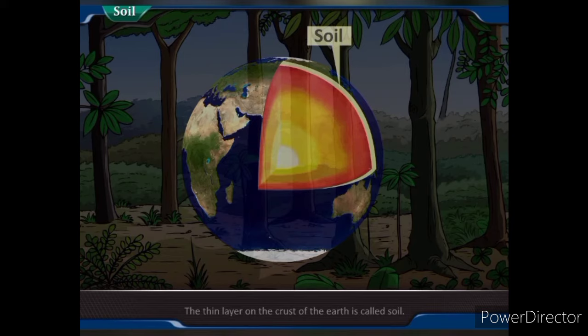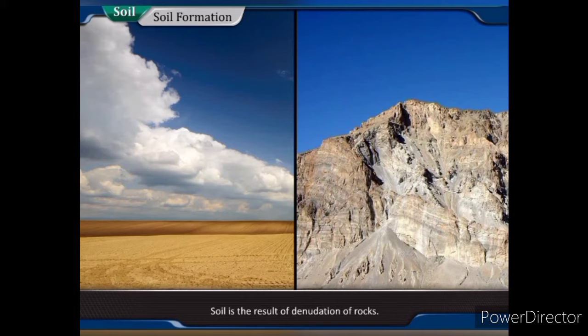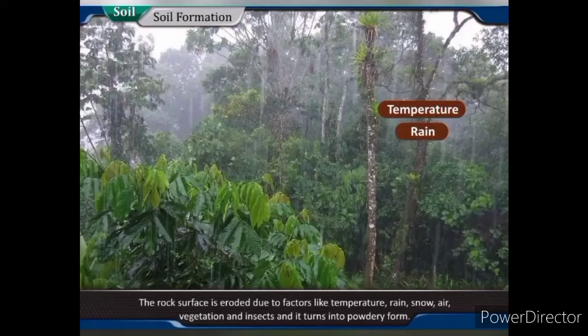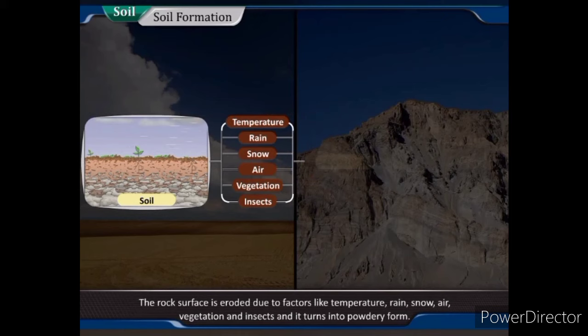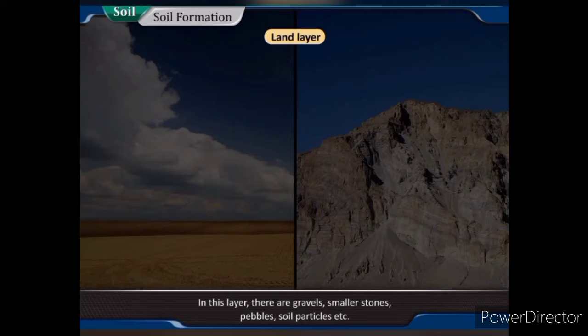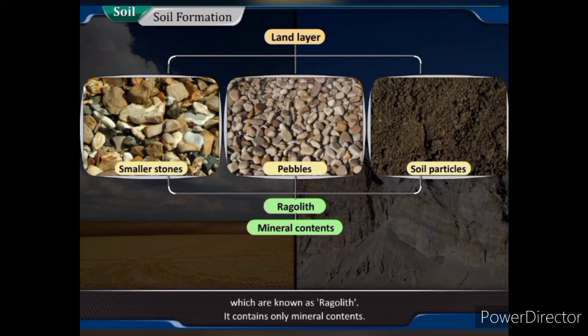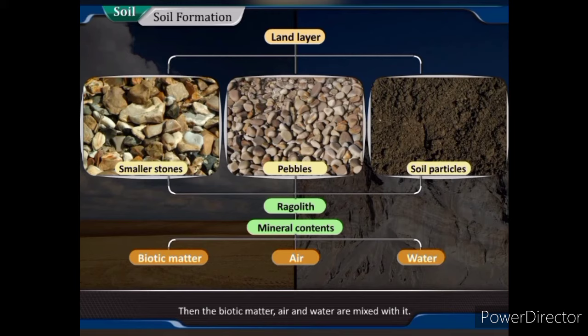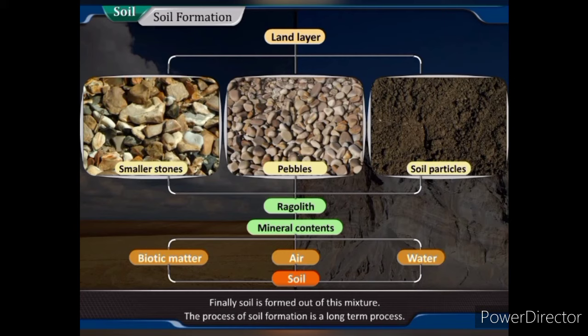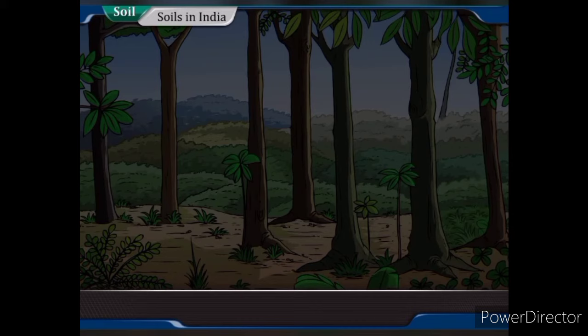Soil: The thin layer on the crust of the earth is called soil. Soil is a thin layer formed of organic and inorganic matter on the surface of the earth. Soil Formation: Soil is the result of the denudation of rocks. The rock surface is eroded due to factors like temperature, rain, snow, air, vegetation and insects, and it turns into powdery form, forming the land layer. This layer contains gravels, smaller stones, pebbles and soil particles, known as regolith, which contains only mineral contents. Then biotic matter, air and water are mixed with it, and finally soil is formed. The process of soil formation is a long-term process.